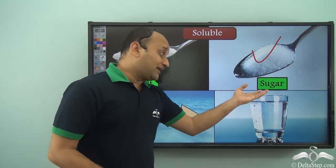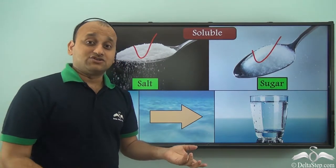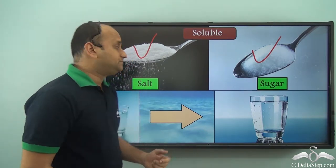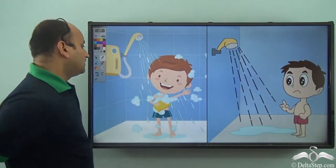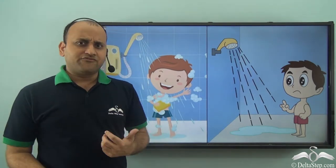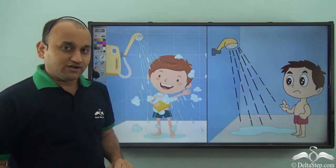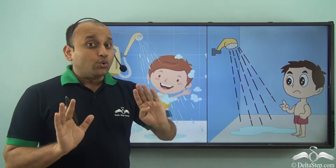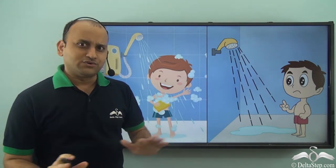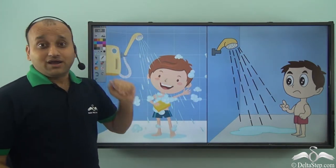So you cannot differentiate between a glass of salt water and a glass of sugar water, because they completely mixed with water. Now, why does that happen? Just like among our friends, there are some people who love water and love to take a shower, while there are some friends who completely try to avoid water — they do not want to take a shower at all. So they are water-fearing while the others are water-loving.